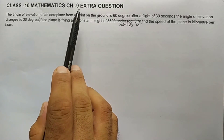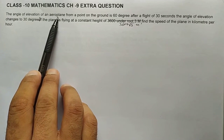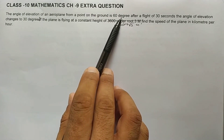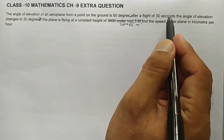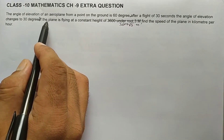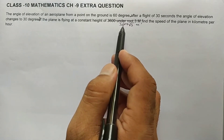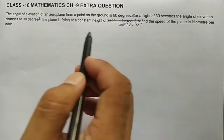Dear students, welcome to this math class. In this video we'll discuss one important question taken from Class 10, Chapter 9. The question is: the angle of elevation of an aeroplane from a point on the ground is 60 degrees. After a flight of 30 seconds the angle of elevation changes to 30 degrees. If the plane is flying at a constant height of 3600√3 meters, find the speed of the plane in kilometers per hour.